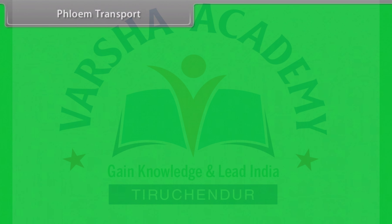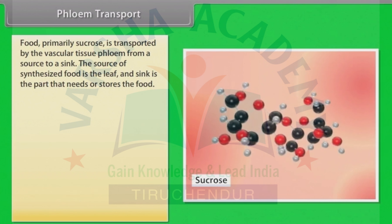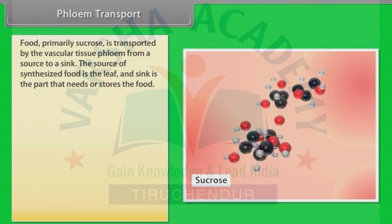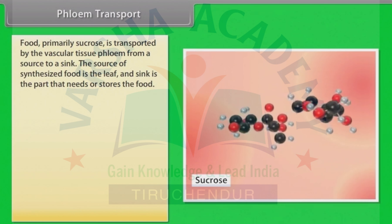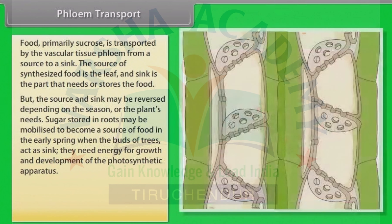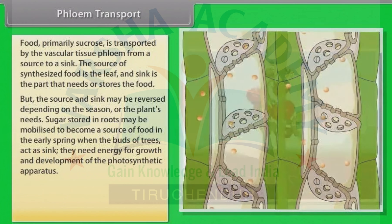Now we will learn about phloem transport. Food, primarily sucrose, is transported by the vascular tissue phloem from a source to a sink. Usually the source is that part of the plant which synthesizes the food. The source and sink may be reversed depending on the season or the plant's needs. Sugar stored in roots may be mobilized to become a source of food in early spring, when the buds of trees act as sinks and need energy for growth and development of the photosynthetic apparatus.